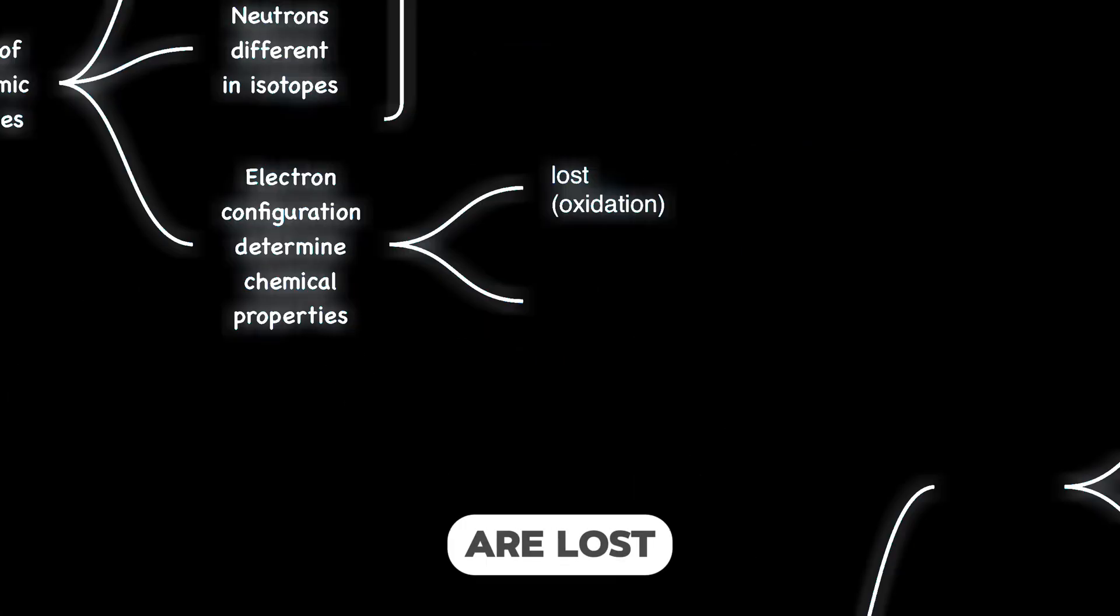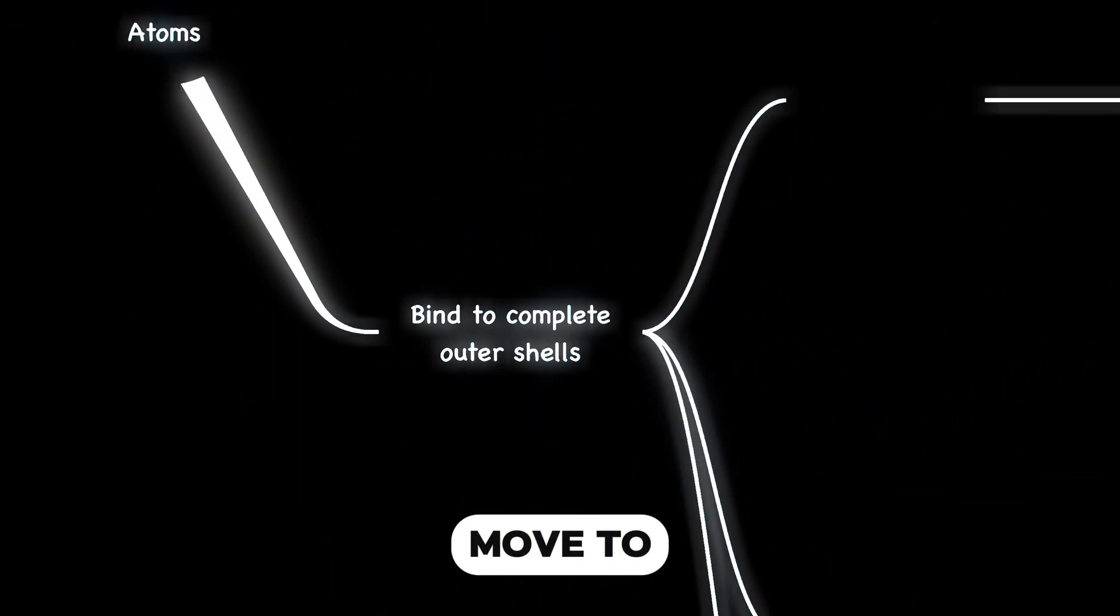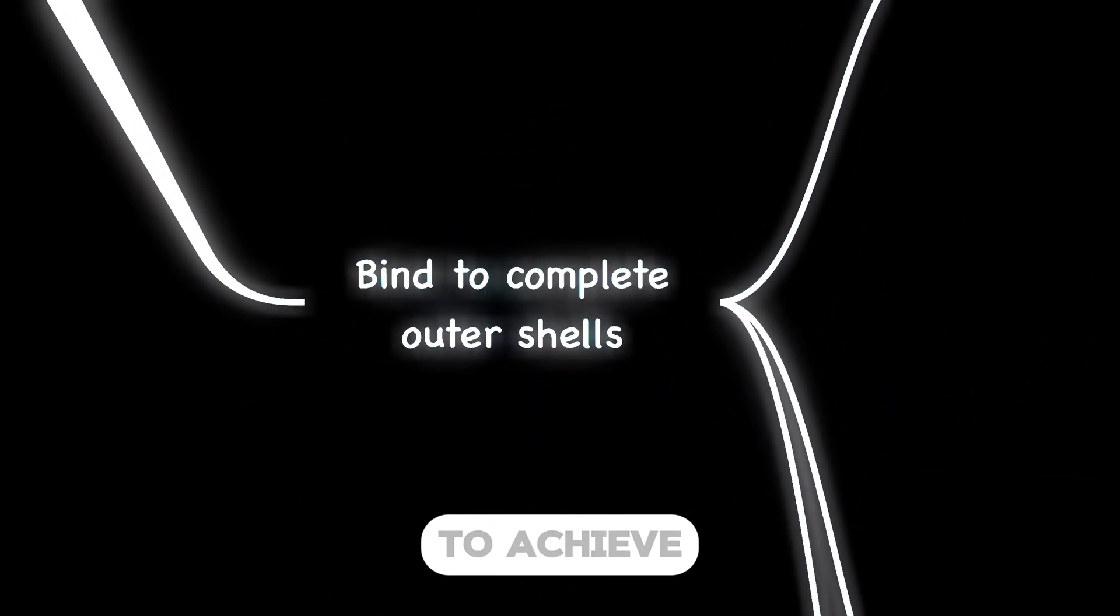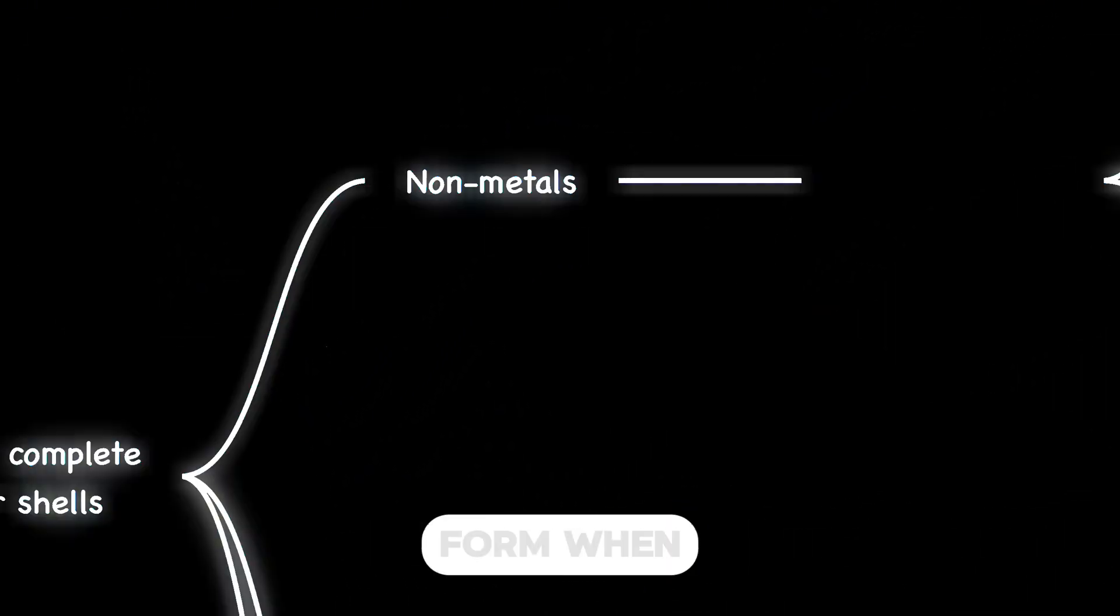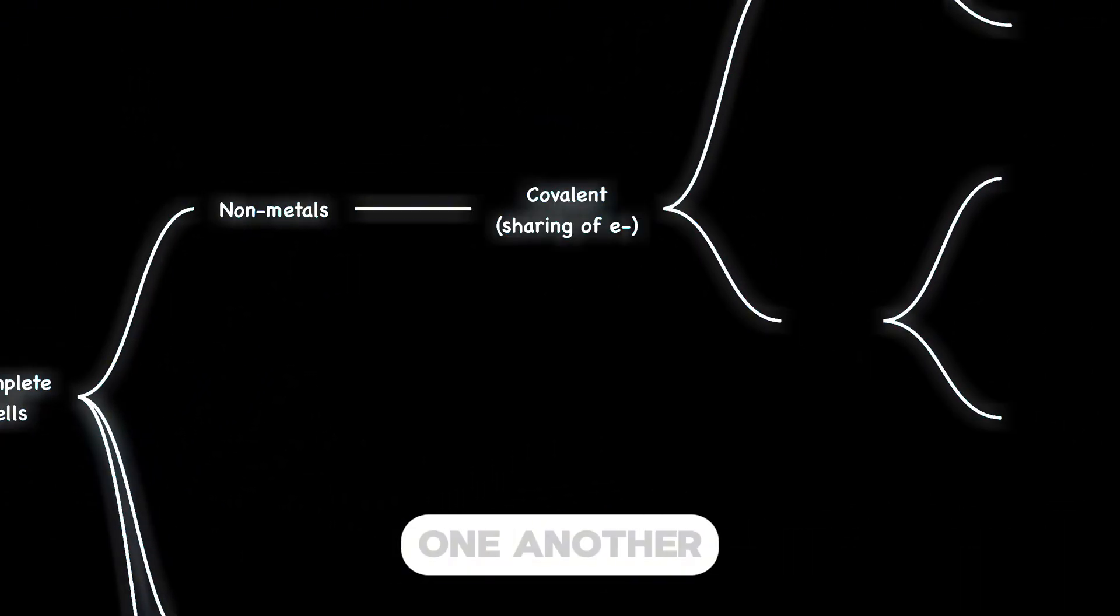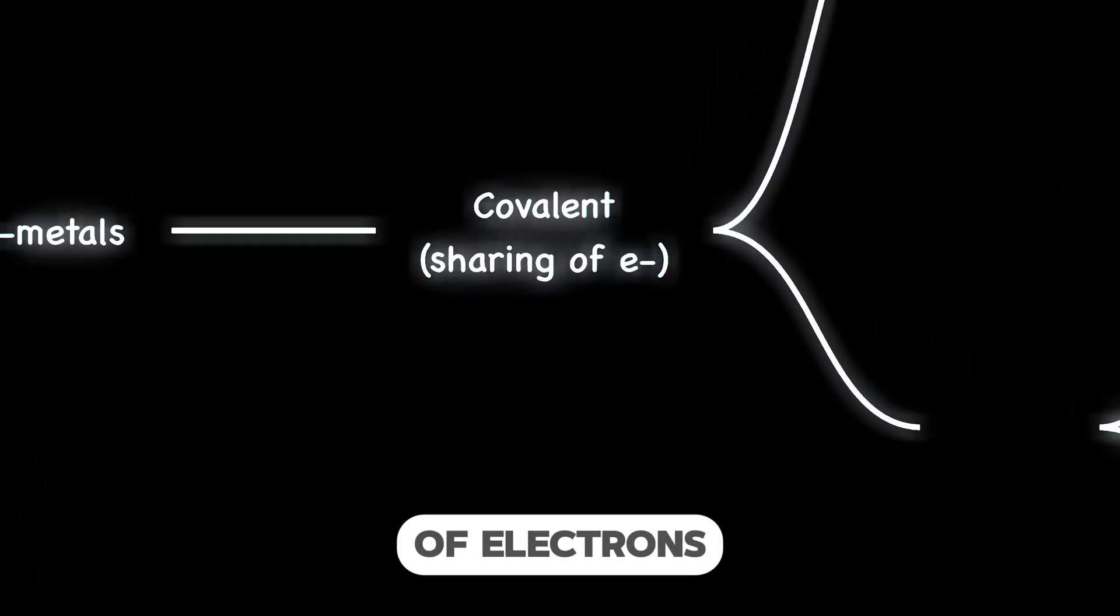Oxidation is when electrons are lost, while reduction is the gain of electrons. Let's now move to chemical bonding. Atoms bind to achieve stability by completing their outer shells. Covalent bonds form when nonmetals bind to one another. Covalent bonds involve sharing of electrons.